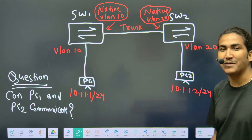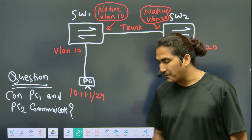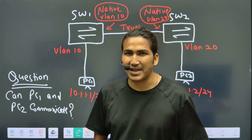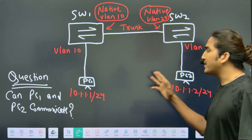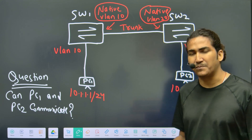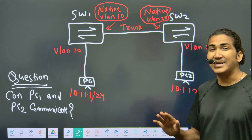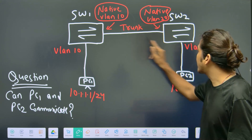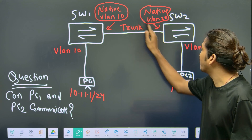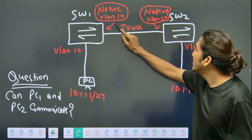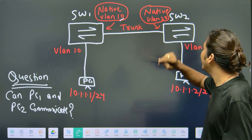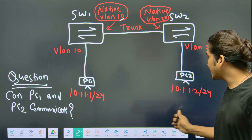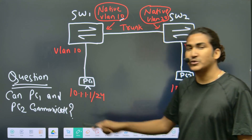Both PCs are using IP addresses from the same subnet. If multiple VLAN users share the same subnet, you cannot configure inter-VLAN routing — but different VLAN users can still have IPs from the same subnet. The interesting part is that the link between Switch 1 and Switch 2 is configured as a trunk, with native VLAN 10 on Switch 1 and native VLAN 20 on Switch 2. The question is: can PC1 and PC2 communicate?